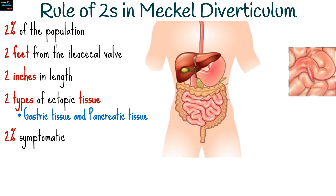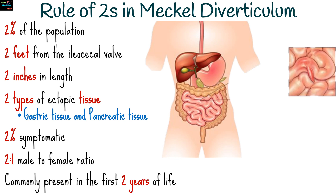Approximately 2% of individuals with Meckel's diverticulum develop symptoms or complications, which can include bleeding, inflammation, bowel obstruction, and perforation. Males are twice as likely to be affected as females. Symptoms and complications are more likely to present within the first two years of life, although they can occur at any age.